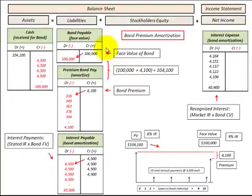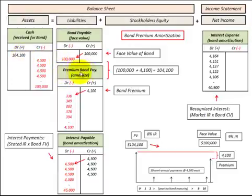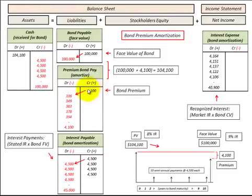Let's look at the basic journal entry. Say we issued a bond for $100,000, so we credit bonds payable for $100,000. In this case we received $104,100 in cash, so we debit cash for that amount, which includes the premium. We need a balancing entry, and we use a valuation account called premium on bonds payable — we credit that for $4,100.